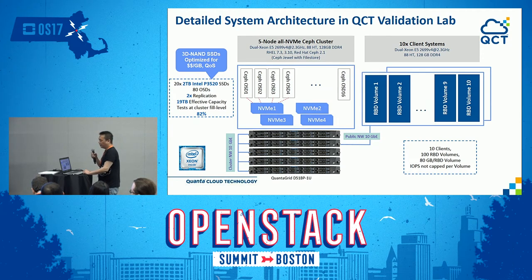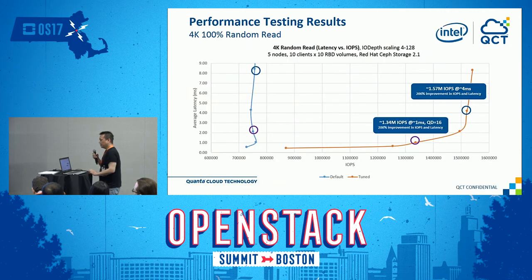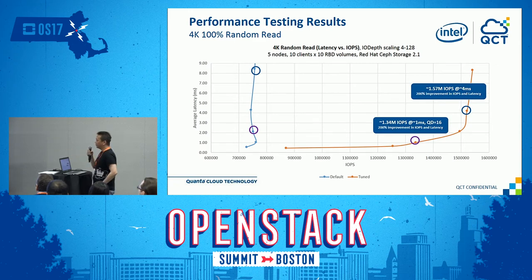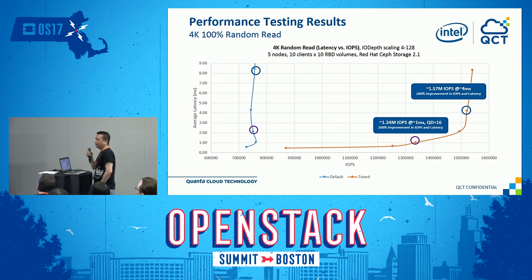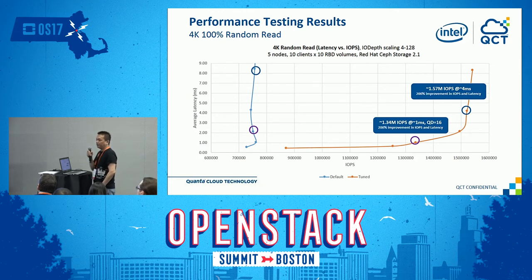These are the 4K random read results. The blue line shows the default configuration with no optimization on ceph.conf or at the OS level. The orange line shows results after extensive tuning on ceph.conf as well as at the OS level — kernel settings, TCP window size, and similar parameters. As you can see, there is a big jump between the default and tuned configurations — after tuning, we see performance roughly double.